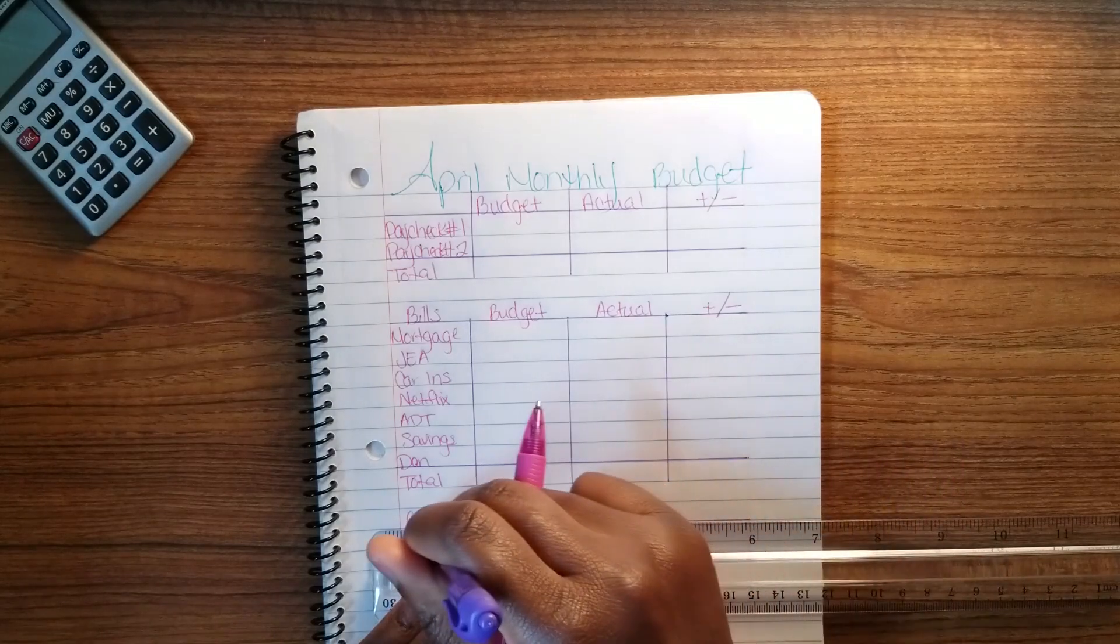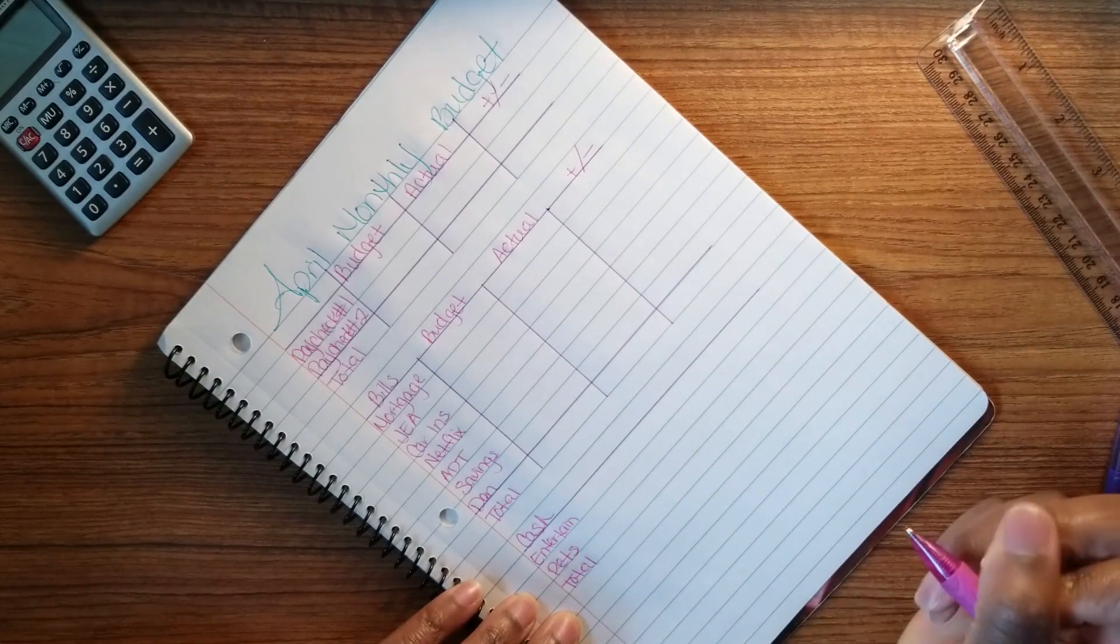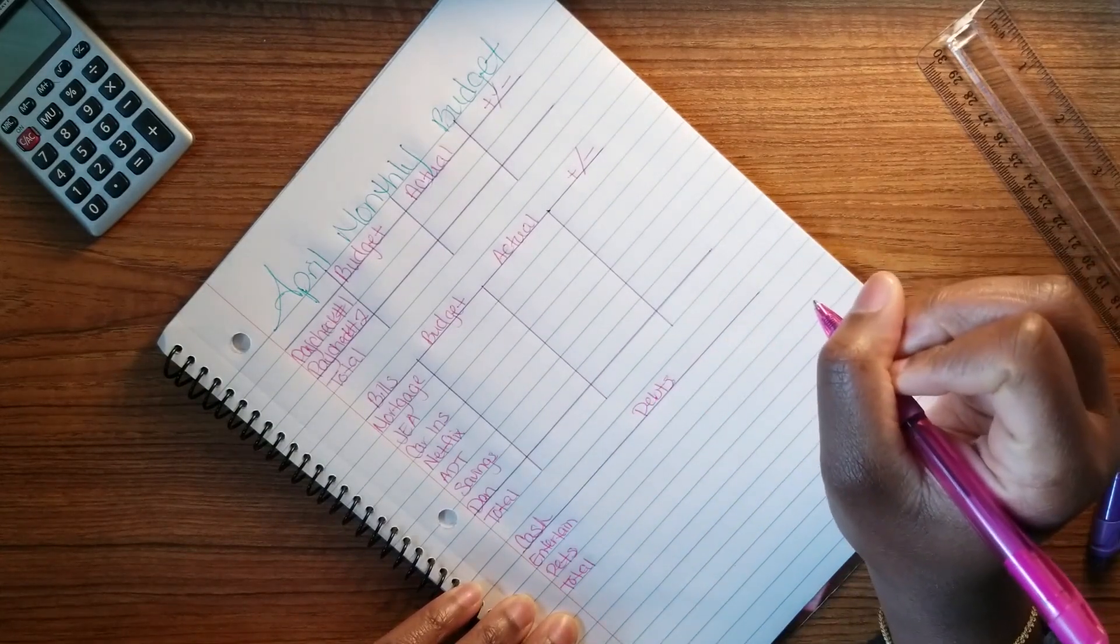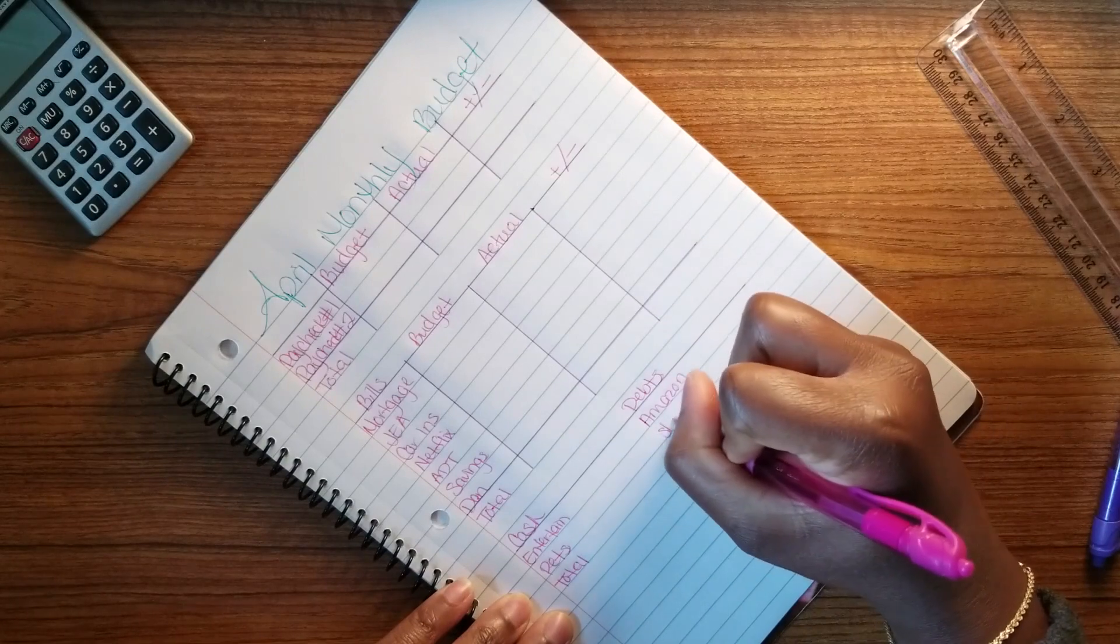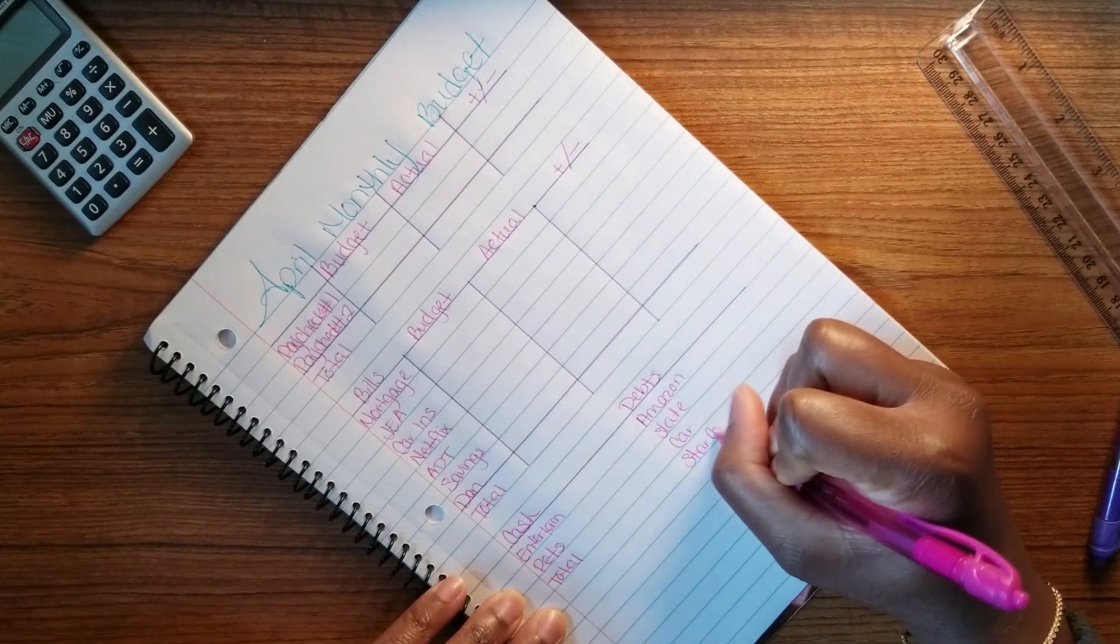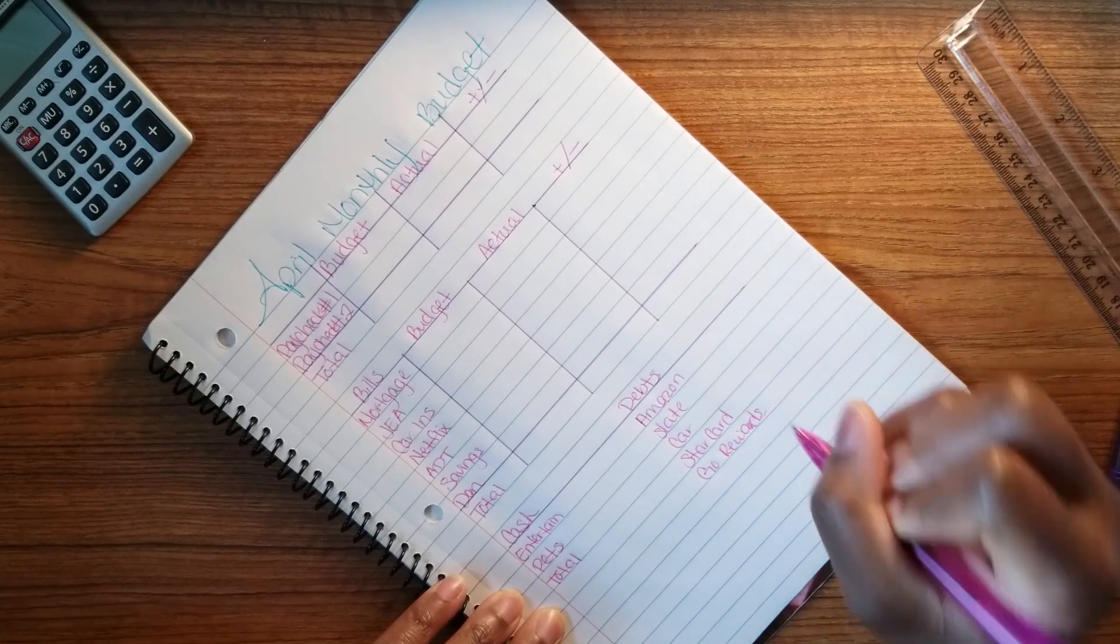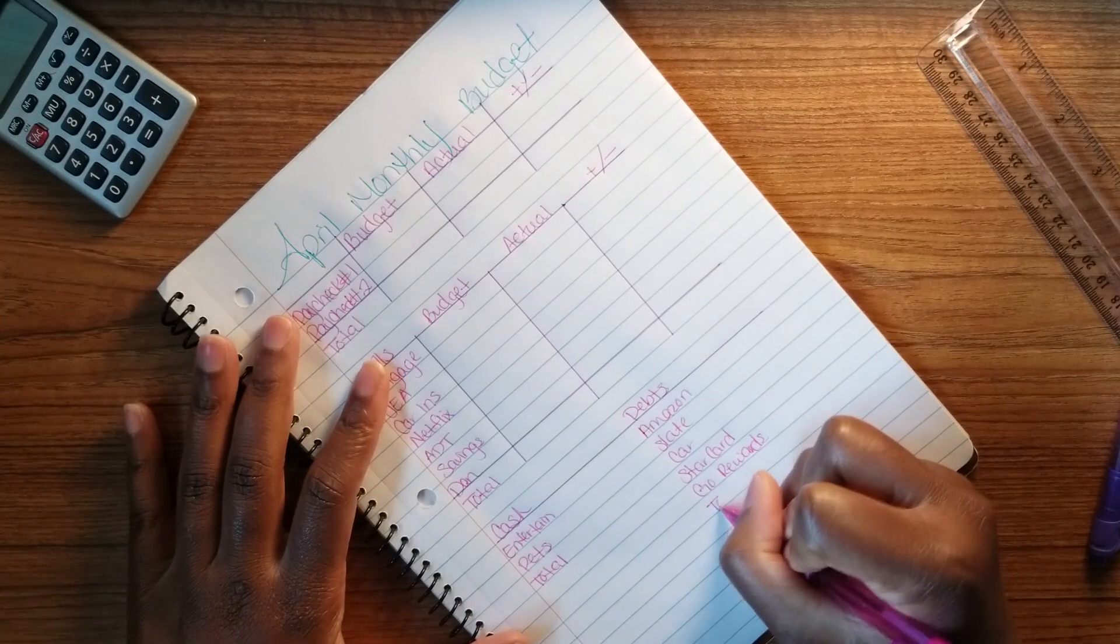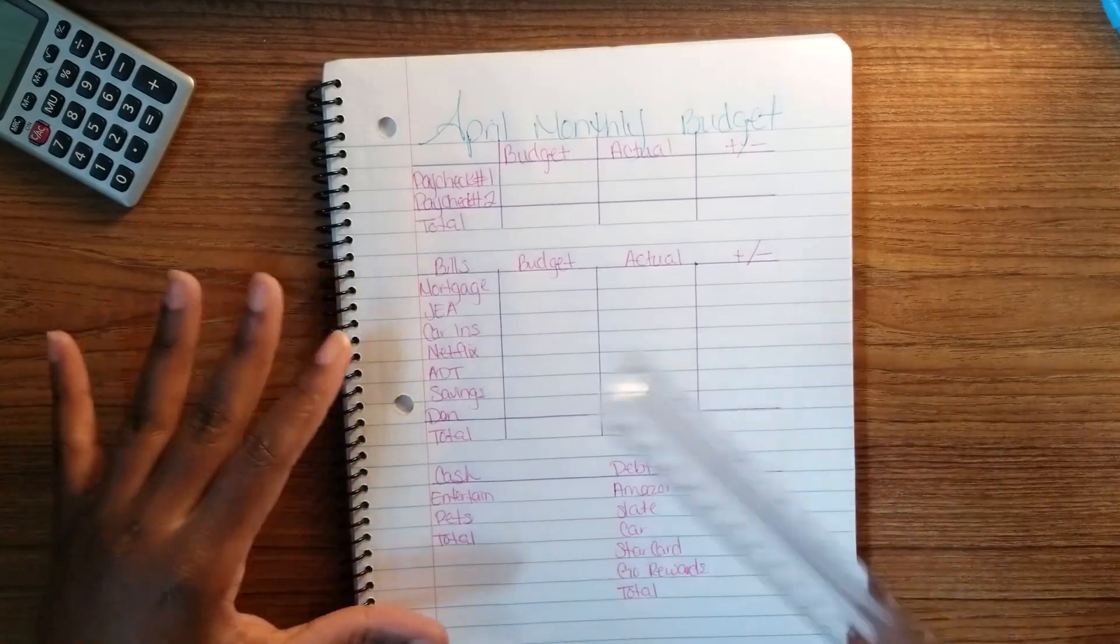I'm actually going to take this all the way across because I put my debt section to my total. My debts: I have Amazon, Slate, my car, my Star card, and Gold awards. I have a total of five debts that are kind of on my monthly budget.